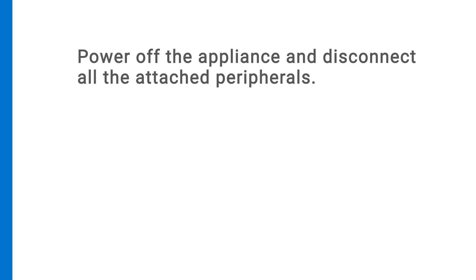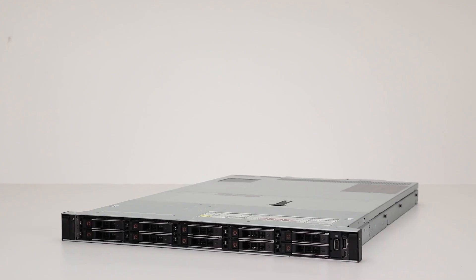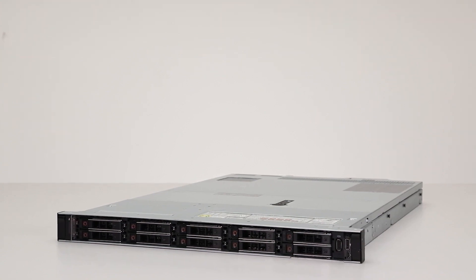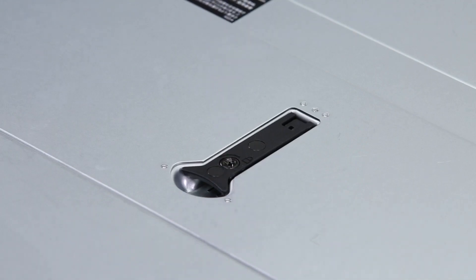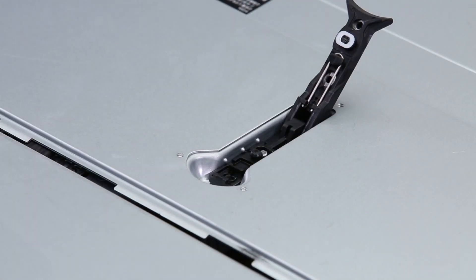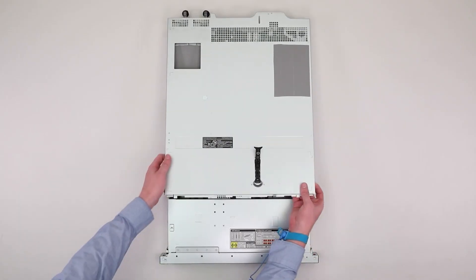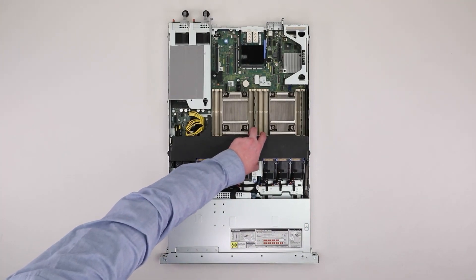Power off the appliance and disconnect all the attached peripherals. Ensure that you always use ESD protection when working inside the appliance. To replace the system memory, first remove the system cover. If the latch lock is in the locked position, rotate to the unlocked position. Lift the latch to disengage the cover from the system, then lift the system cover off. Lift the air shroud from the system and remove it.